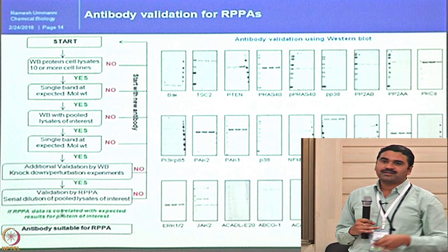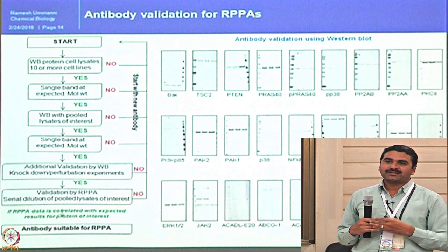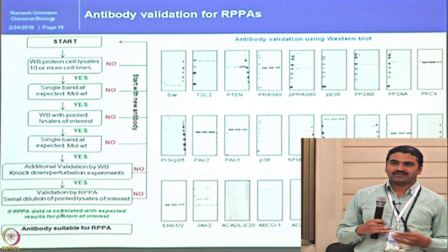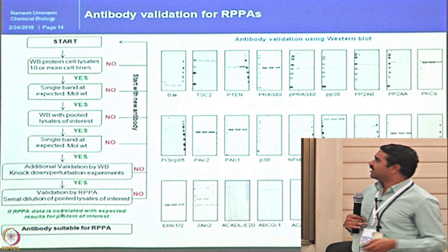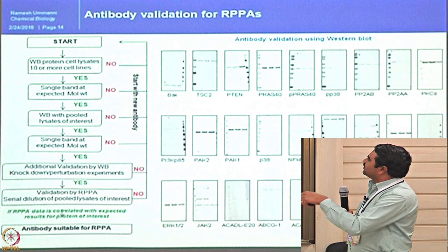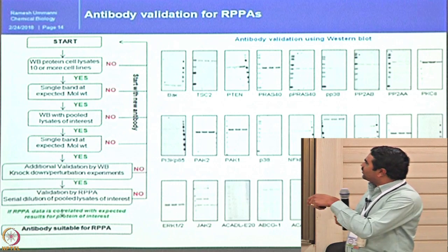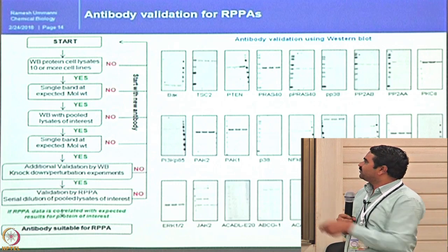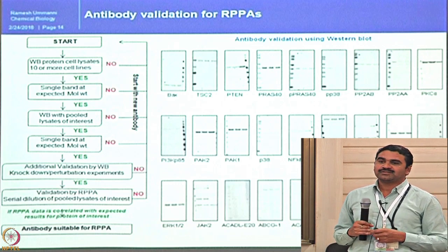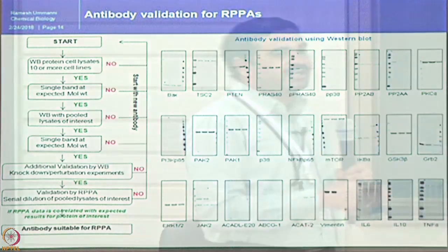In RPPA validation, we check whether the antibody can detect serial dilutions properly — 2-fold, 5-fold, or 10-fold dilutions. If yes, and if the RPPA data correlates with expected results from the protein of interest, the antibody is declared useful for RPPA. Every antibody receives one of three codes: go ahead, use with caution, or not suitable. These three designations are widely used in the RPPA community.